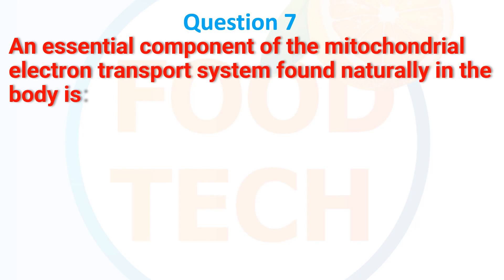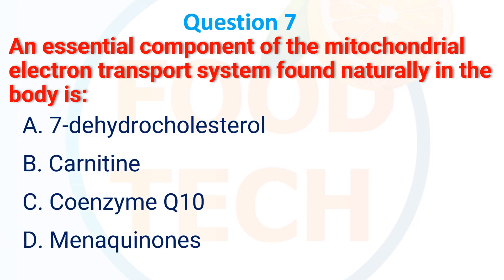Question 6: An essential component of the mitochondrial electron transfer system found naturally in the body is — a. 7-dehydrocholesterol. b. Carnitine. c. Coenzyme Q10. d. Aminoquinone. The correct answer is Coenzyme Q10.